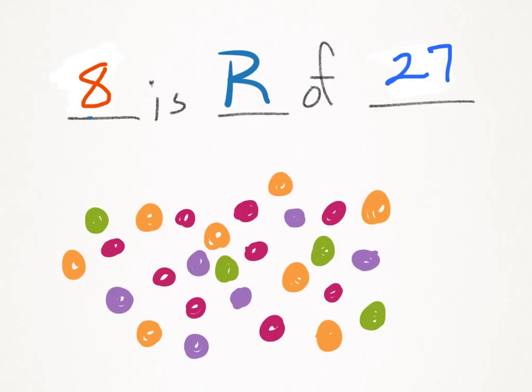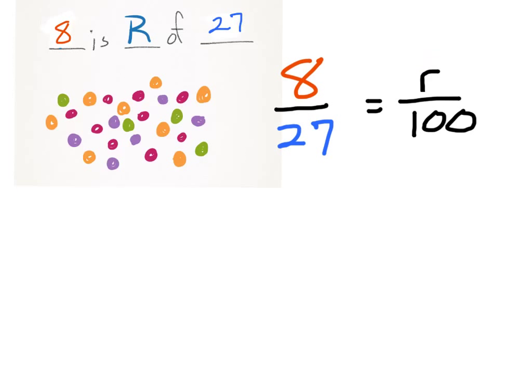So I've counted them up, and I have eight pieces of orange candy. So in order to solve this, I'm going to put this into my proportion. Here's eight, which represents my percentage. 27 is my base, and I want to find out what r is. So I'm trying to find the percent, not the percentage, the percent of orange candy out of the total.